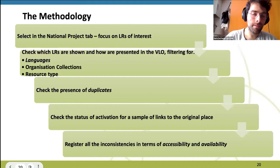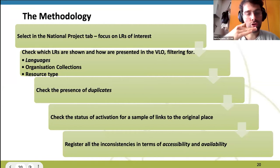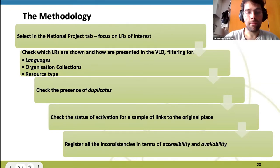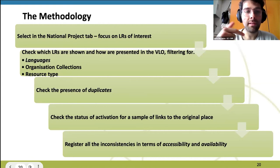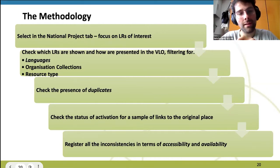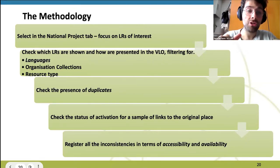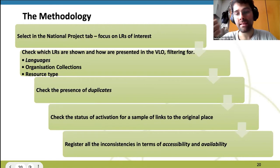We developed a methodology abstracting different steps: starting from the selection of the national project tab on the VLO and focusing on language resources of interest, checking which resources are shown and how they are presented, filtering for languages, organization, collection, and resource type. Then we checked for duplicates, checked the status of activation for a sample of links to the original place, and registered all inconsistencies in terms of accessibility and availability.